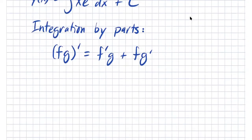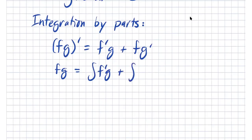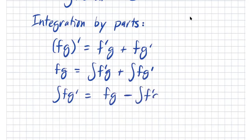To get integration by parts, integrate both sides of the product rule: f times g equals the integral of f prime g plus the integral of f g prime. Rearranging gives: the integral of f g prime equals f g minus the integral of f prime g. Written with u and v notation: the integral of u dv equals u times v minus the integral of v du.